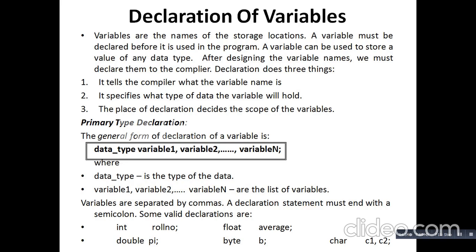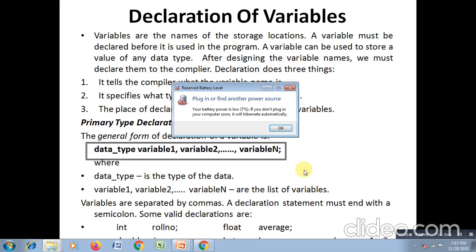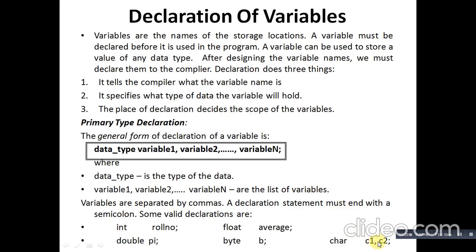Some example declarations: 'int' is the data type and 'roll_number' is a variable of int data type, ending with a semicolon. Similarly, 'float average', 'double pi', 'byte b', and 'char c1, c2' — so c1 and c2 are two variables of character data type, separated by a comma operator.